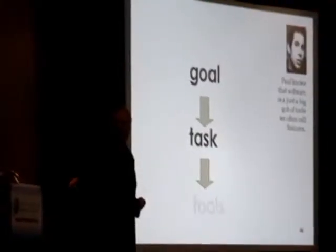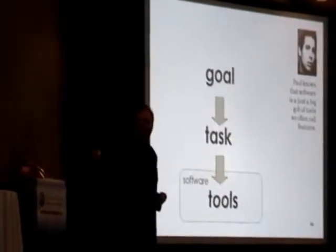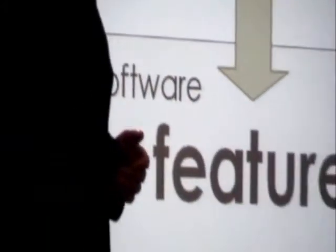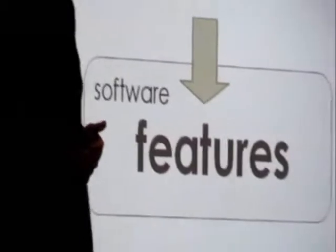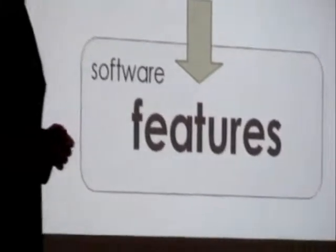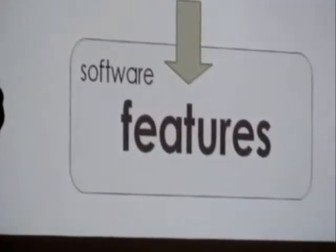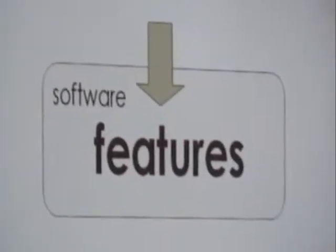When I say tool, I mean that the software we build is kind of a tool, and sometimes we refer to all those tools as features in our software. It's features that help people do things in order to reach goals. Where Paul focuses is on the doing things — the tasks that people need to do.